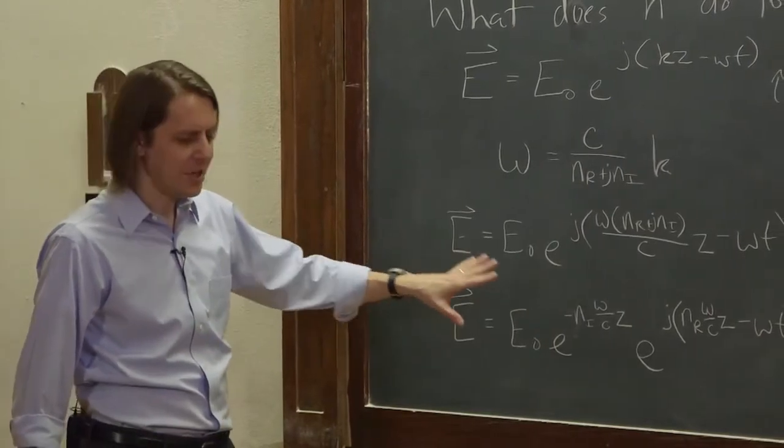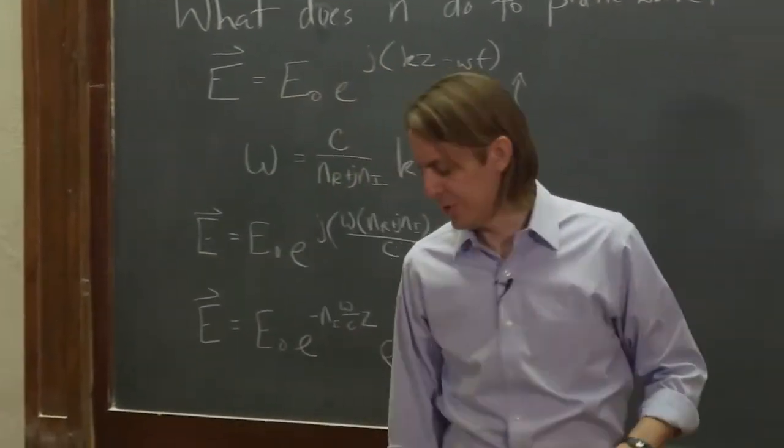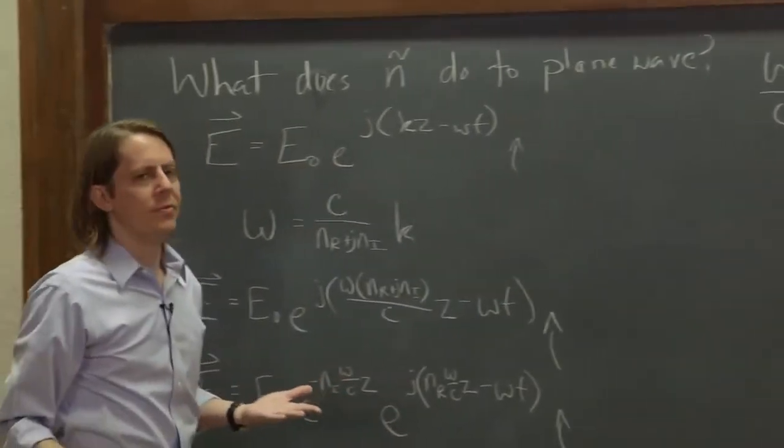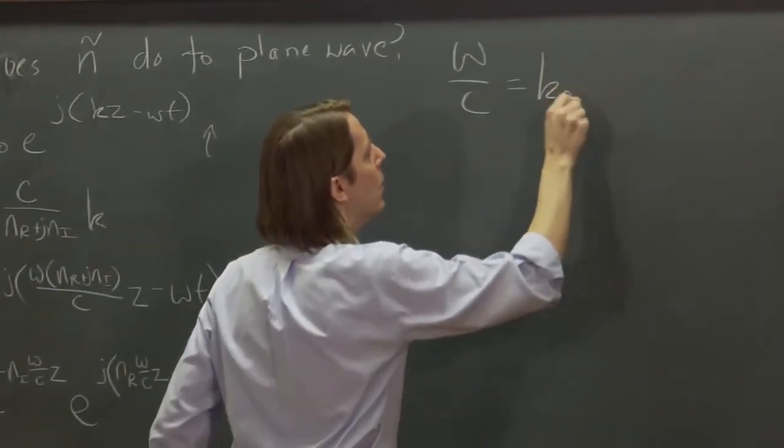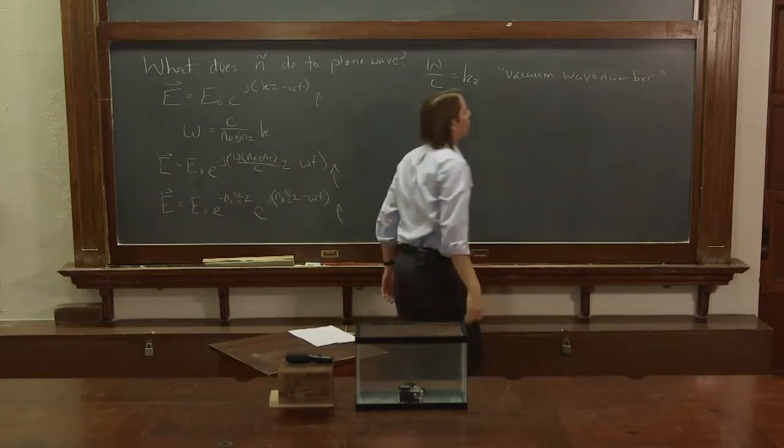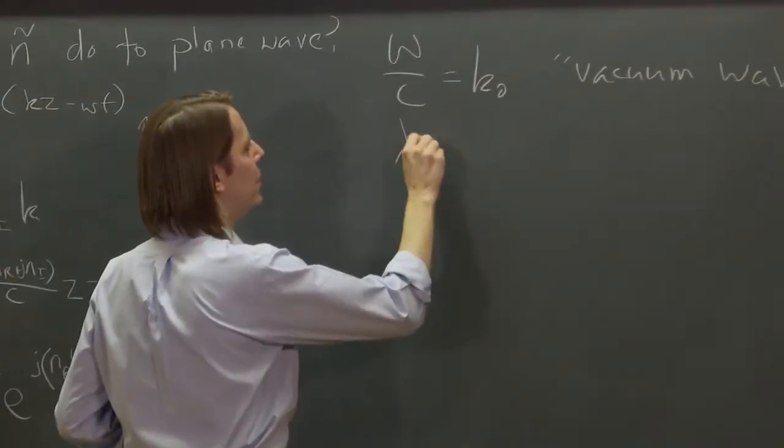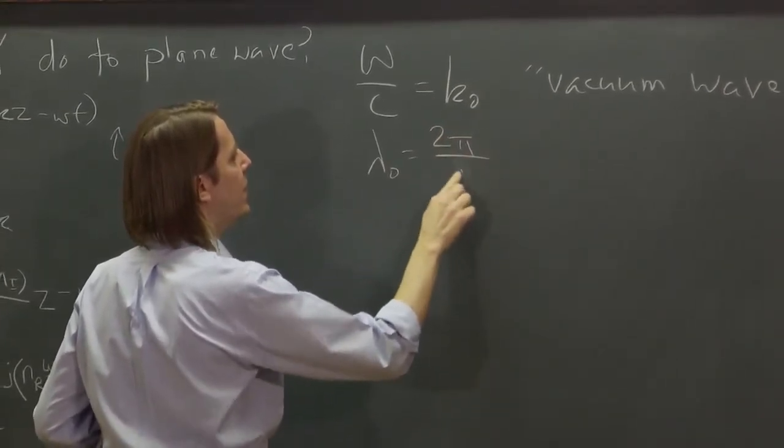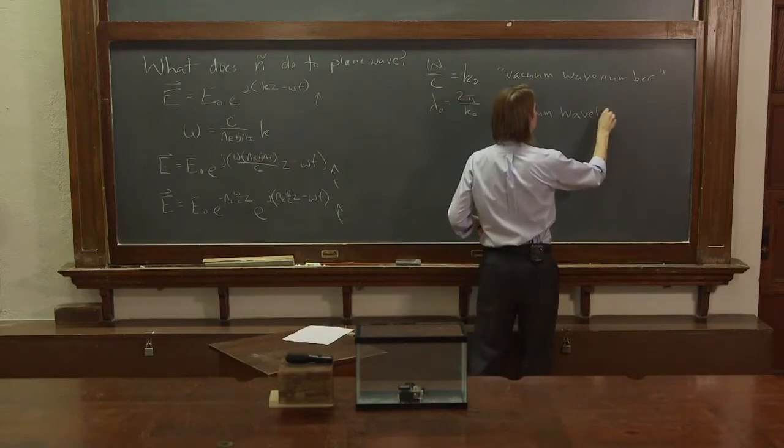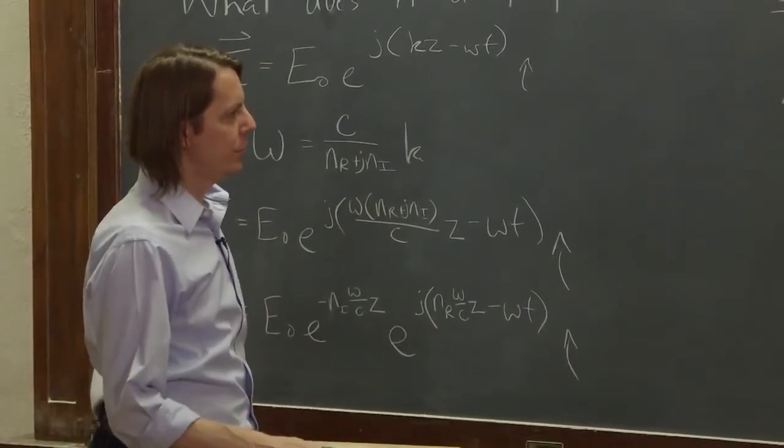So that's what it does to the plane wave. Before we get into the implications of that, I want to point out that we want to think about omega over c. What is omega over c? Well, it looks like a wave number. We call that k naught. It's the vacuum wave number. Or if we had a vector, it would be the vacuum wave vector. And you could also think in terms of lambda, then you also must have something called lambda naught, which is 2π over k naught. And that's the vacuum wavelength.